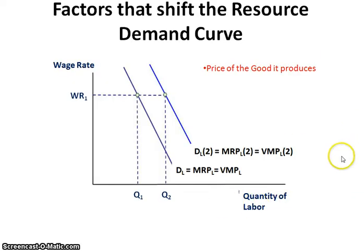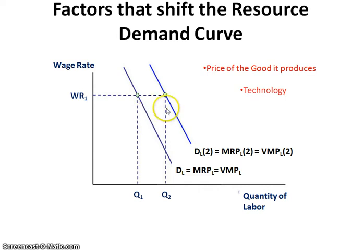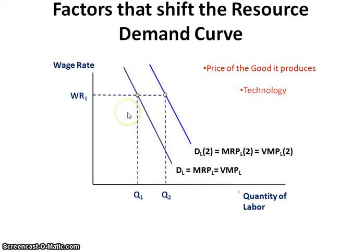Besides the price of the good it produces, another thing that affects the demand curve for labor is technology. Technology usually will increase the demand for labor because it makes that worker more efficient — if they're faster and help the firm produce things faster, you'll find an increase in demand. The only time technology wouldn't increase the demand for labor is if technology were a substitute for laborers, and as a result that would decrease the demand for workers. So it really depends upon what is going on with the technology.